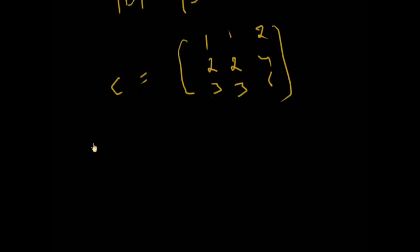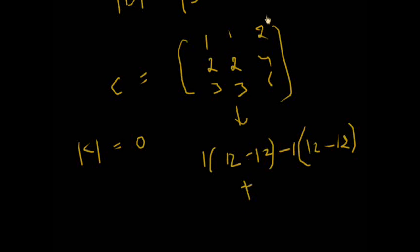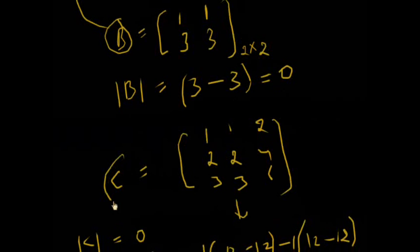We calculate the determinant of C. Since two rows are identical, the determinant will be zero. Expanding: 1×(2×6 − 3×4) minus 2×(1×6 − 3×2) plus 3×(1×4 − 2×2) gives 0 − 0 + 0, which equals zero. So C is also a singular matrix.